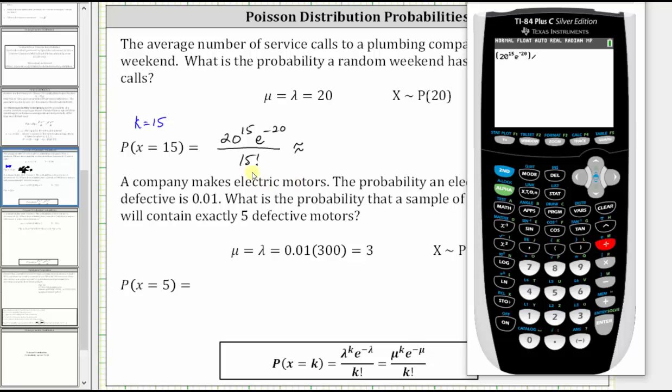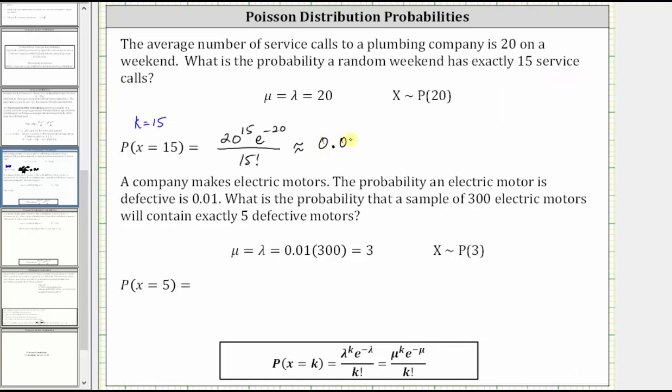Divided by 15 factorial. Enter 15, press math, arrow to probability. Select option four for the factorial and enter. To four decimal places, we have approximately 0.0516, which is 5.16%.